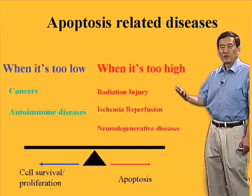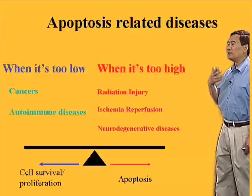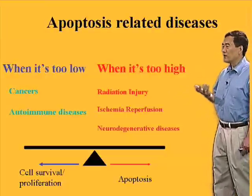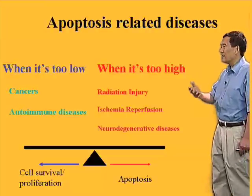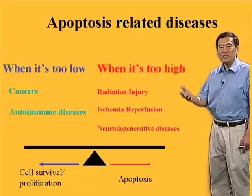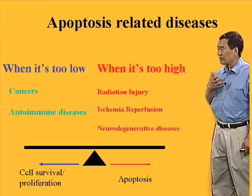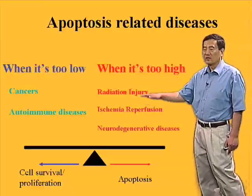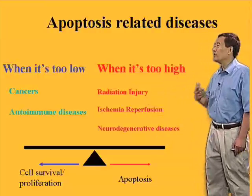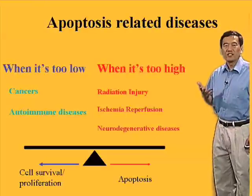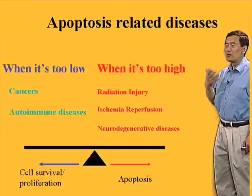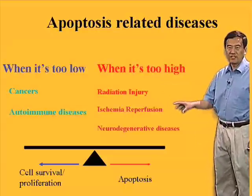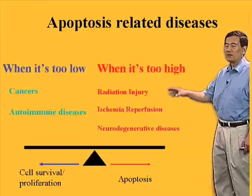If there is something wrong with the program, there are many diseases that can arise. One purpose of studying apoptosis and trying to understand the molecular details of the apoptotic program is to understand what's wrong in these disease states, and hopefully to come out with strategies to correct these defects and battle these diseases. At the end of my talk, I'm going to give you two specific examples of how we might be able to do that.